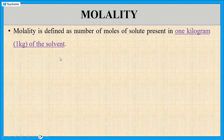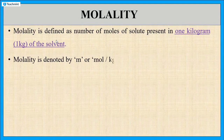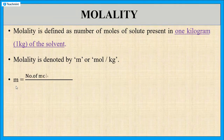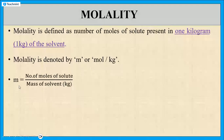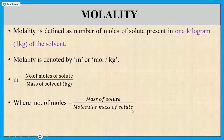Molality is about the mass concept whereas molarity is about the volume concept. Molality is denoted by small letter m or mole per kg. Molality can be calculated using the formula: molality m equals number of moles of solute divided by mass of solvent in kg. The number of moles of solute equals mass of solute divided by molecular mass of solute.